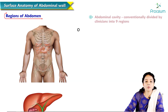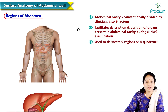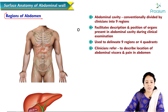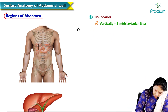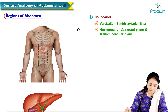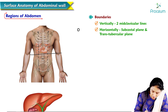The abdominal cavity is conventionally divided by clinicians into 9 regions, which facilitates description of organ positions during examination. These regions are bounded vertically by the two mid-clavicular lines, and horizontally by the subcostal plane above and the transtubercular plane below, with the transtubercular plane located at the level of L5.